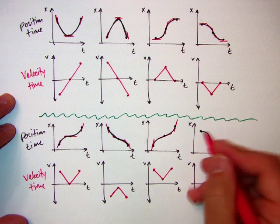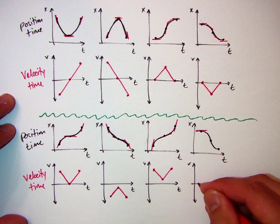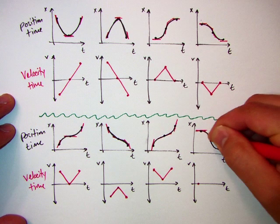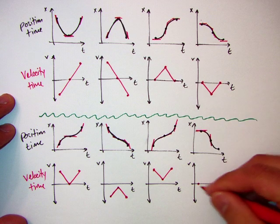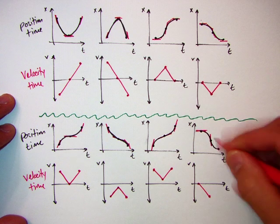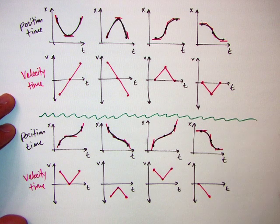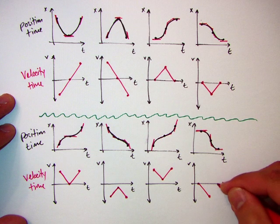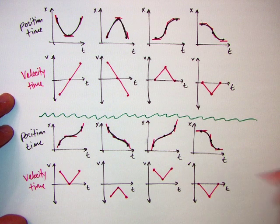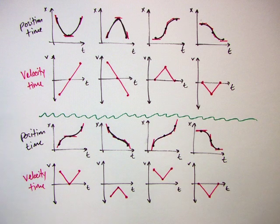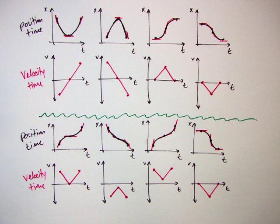And then this last one, I start pretty flat. So let's say a velocity of zero. I'm decreasing in the negative direction. So I get pretty negative. And then I go back to a slope of zero. So I'm increasing back to the velocity of zero.